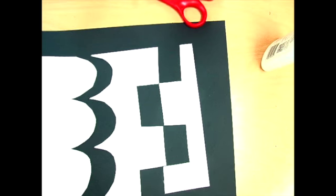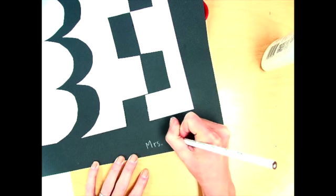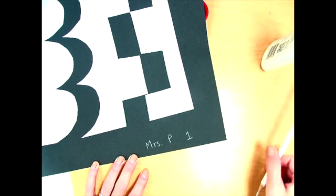Then your very, very last step is you're going to take a white color pencil. And in the bottom right hand corner, you're going to sign your first name, last initial, and then put your class on there. So one for first grade. All right, you guys, there you have it. Now you are done with your line puzzle. I can't wait to see what you create.